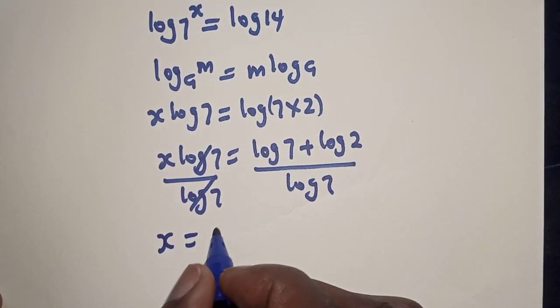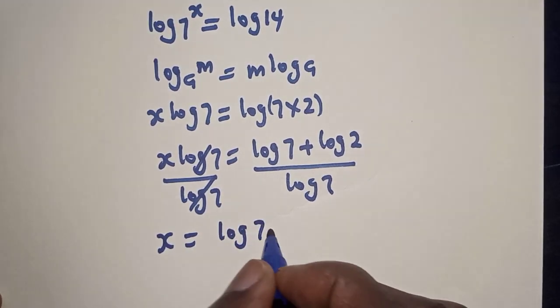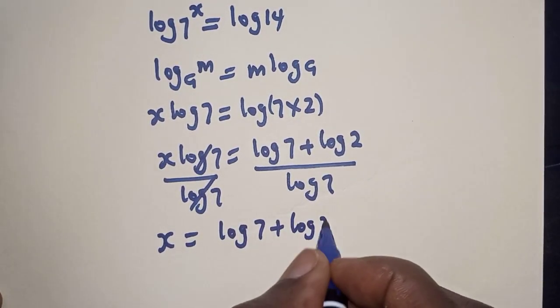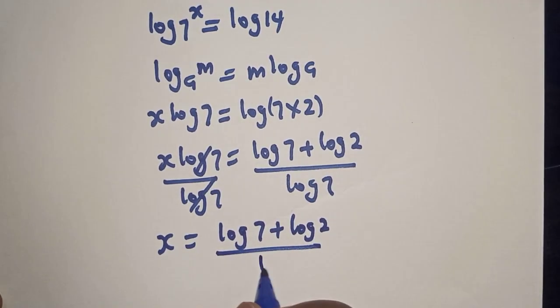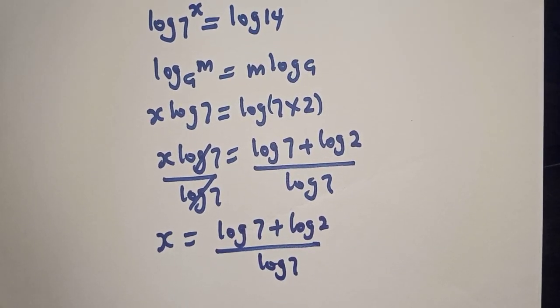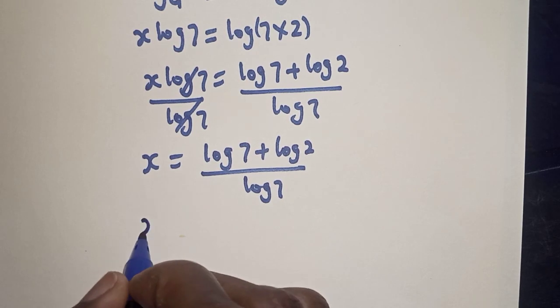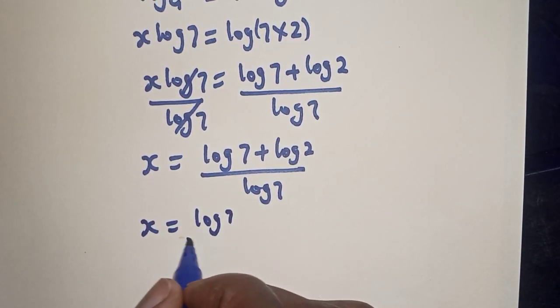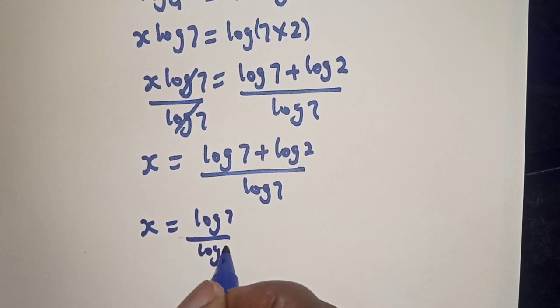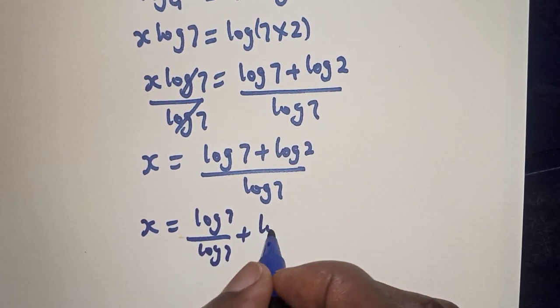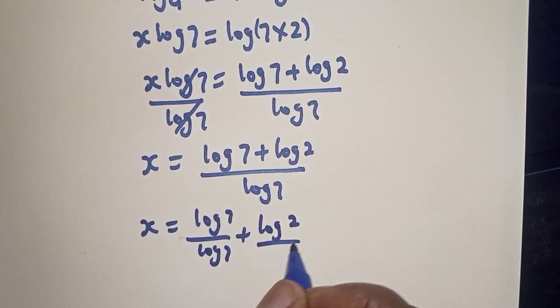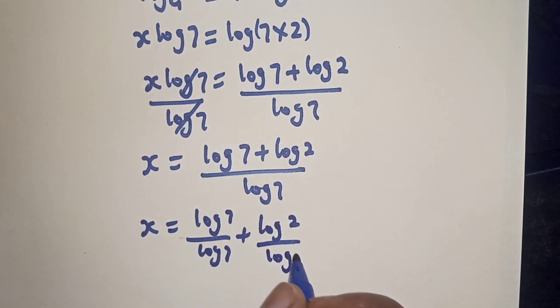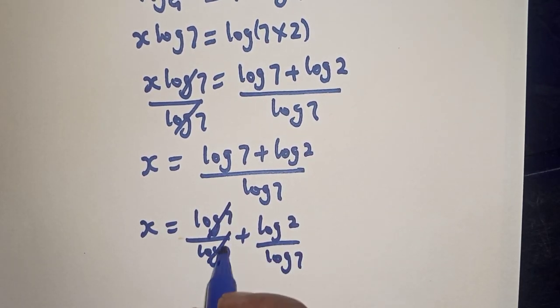S is equal to log 7 plus log 2, all over log 7. This one will cancel this.